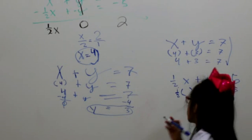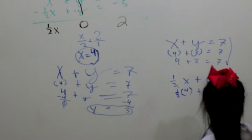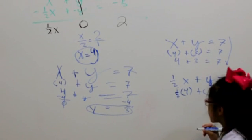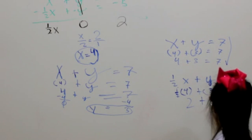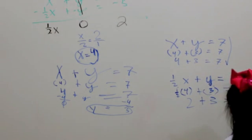x is equal to 4. y is equal to 3. 4 divided by 2 is 2 plus 3 equals 5. Check!